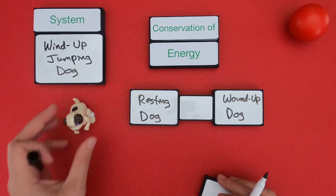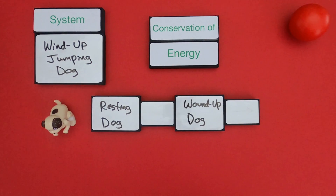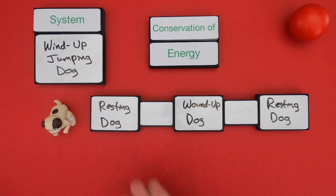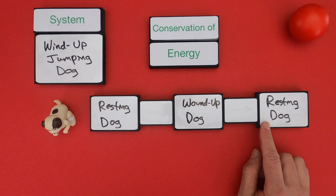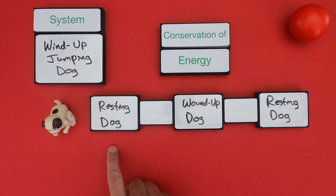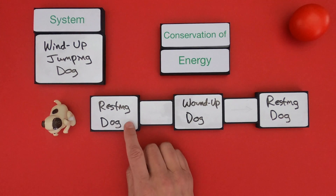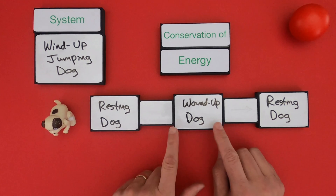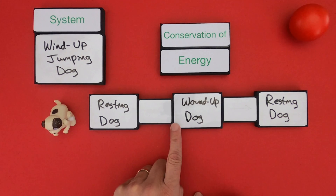Eventually that dog starts jumping and eventually it's back to its initial state. So we're going to look at these three different points in time: we've got the resting dog, the wound-up dog, and then the resting dog again at the end. The next step is to start thinking about energy. Where is the energy in a resting dog? In this case I would say there's no energy in a resting dog — there's nothing that's going to cause it to change. So I'm not going to list anything underneath that.